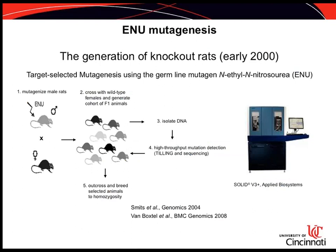A 2009 publication showed that you could create knockout rats using zinc-finger nucleases. However, in the early 2000s those two techniques were not available, and it is then that my former PI came up with an idea of using ENU mutagenesis, or target-selected mutagenesis. This technique has been around and used in different organisms such as Drosophila, C. elegans, and zebrafish.